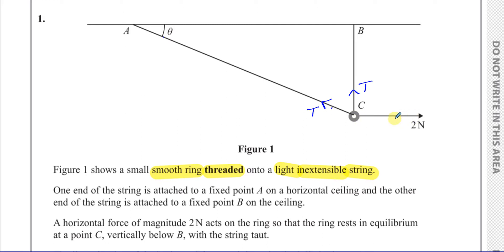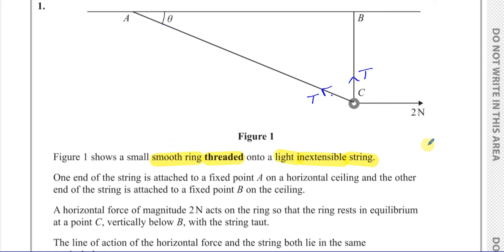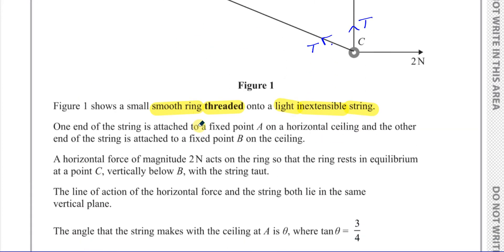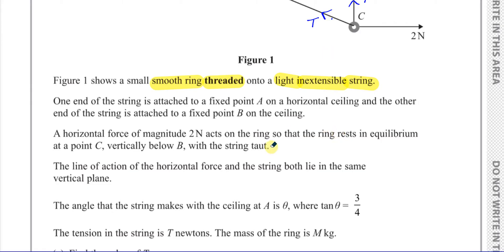A horizontal force of magnitude 2 newtons acts on the ring so that the ring rests in equilibrium at point C, which is vertically below B, with the string taut. The line of action of the horizontal force and the string both lie in the same vertical plane — they're not at angles to each other in different planes. The angle the string makes with the ceiling at A is theta, where tan θ = 3/4. The tension in the string is T newtons and the mass of the ring is m kilograms.